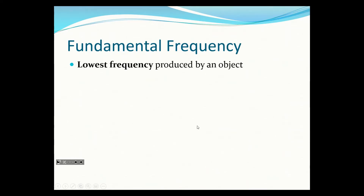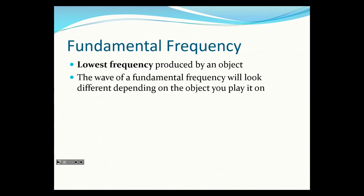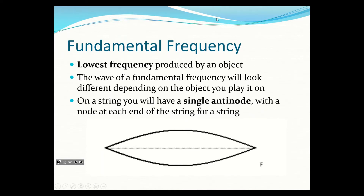The fundamental frequency is the lowest frequency that will cause an object to resonate. On a string — like a guitar string — the fundamental frequency produces a standing wave with nodes at both fixed ends and one antinode in the middle. This is the longest wavelength that fits, representing half a wavelength across the full string length.